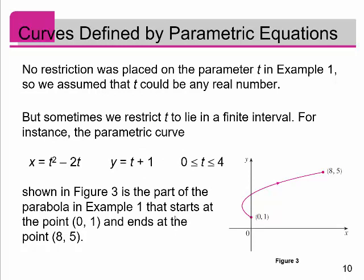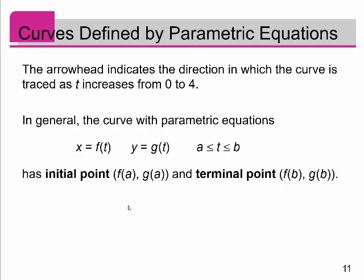No restrictions were placed on the parameter t in this first example, so we assumed t can be any real number. But obviously sometimes we restrict t to lie in a finite interval. For instance, if we look at the same parametric curve x equal to t squared minus 2t and y equal to t plus 1, but only from the time interval from 0 to 4, you see the part of the parabola that starts at 0, 1 when time equals 0 and ends at 8, 5 when time equals 4. You can still draw the arrow indicating where it starts and where it's going. The arrowhead indicates the direction in which the curve is traced as t increases from 0 to 4.